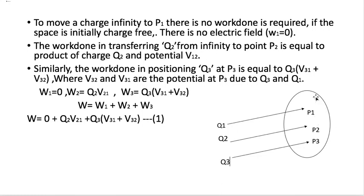For this derivation, we have a Gaussian body with three charges q1, q2, and q3 at infinite distance from that body. To move a charge from infinity to point p1, no work done is required if the space is initially charge free, since there is no electric field. So w1 is equal to zero.